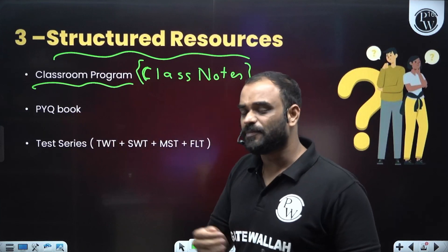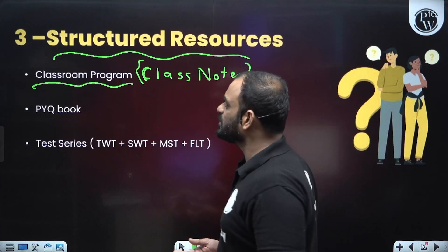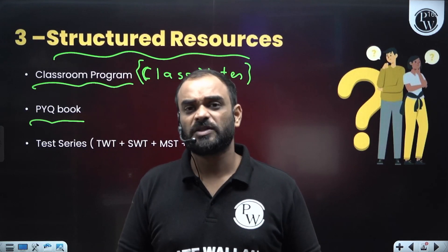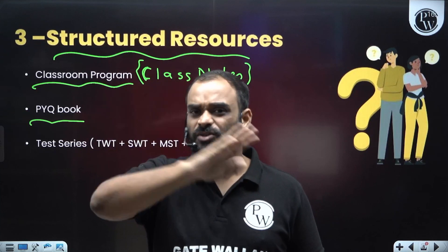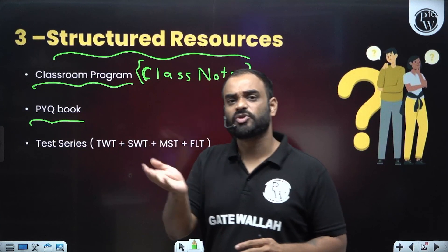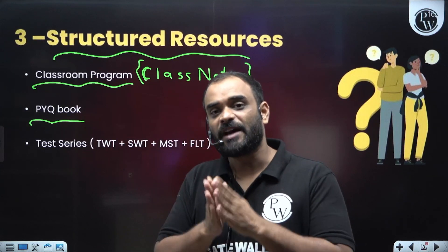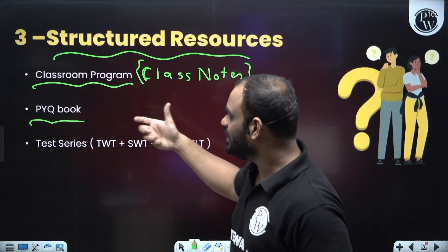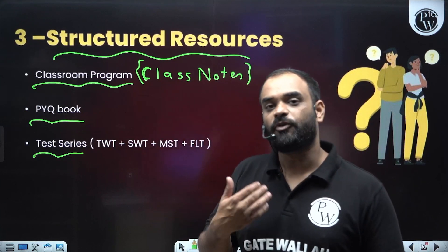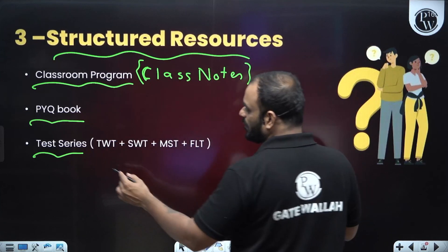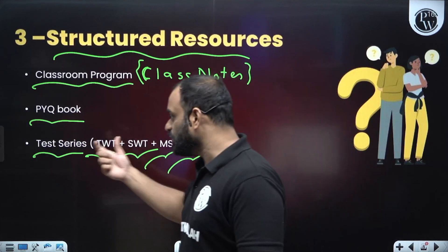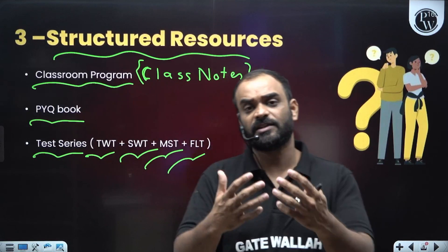After completing the classroom program or individual chapter of any subject, you can also use a PYQ book. Try to find a good PYQ book — do not just download PYQ papers, because you will need to sort which question was asked from which subject, which becomes very clumsy. A good PYQ book provides solutions and questions bifurcated by their respective subject. You should also follow a test series to find out your performance after learning a topic — including topic-wise tests, subject-wise tests, mixed subject tests, and full-length tests.